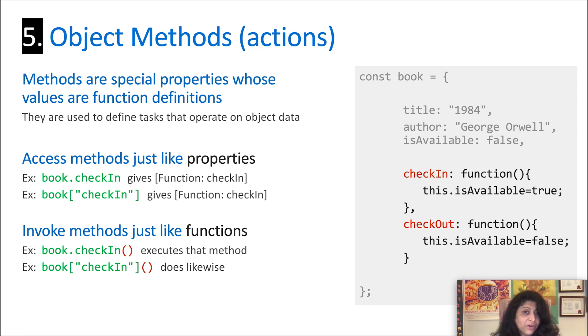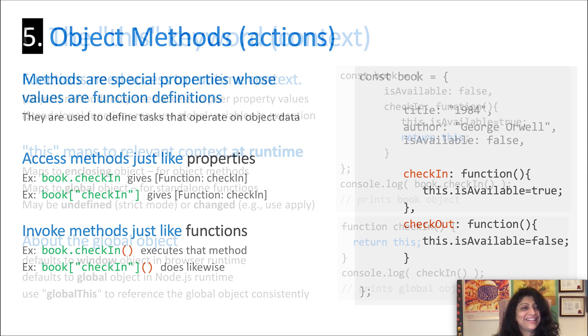That's about getting access to the function definition or object itself. What if you want to use it? Well, you invoke it just like any other function using regular standard parentheses. So in this case, book dot check-in, open brackets, close brackets will actually execute the code inside that function setting the is available property to true. And note that I can use either one of those notations. So I can actually use the bracket notation as well. Simply use the same way to access the property, access the function or method, and then call brackets on it to invoke it. Sound easy? I hope so.